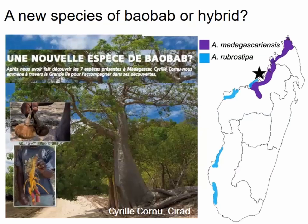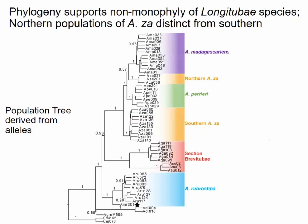Field work in Madagascar is always an adventure. Upon returning, I was contacted by a researcher at CIRAD who published a bulletin asking whether they had found a new species of baobab. They sent me material from a population at the range interface of madagascariensis and rubrosstippa in the northwest — an area where very few herbarium collections of rubrosstippa exist from these populations.